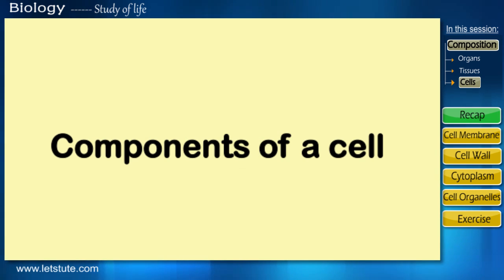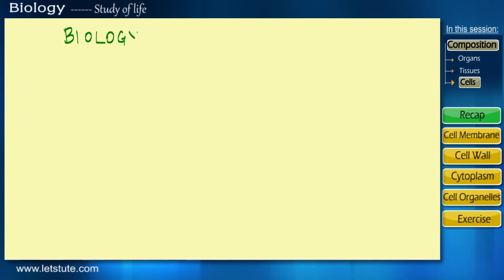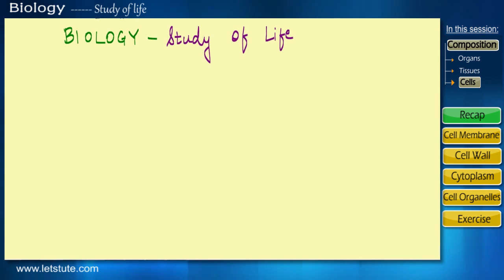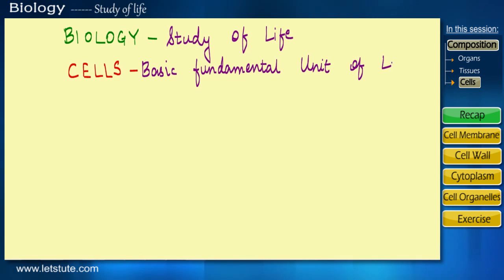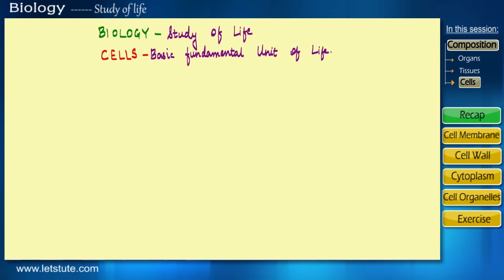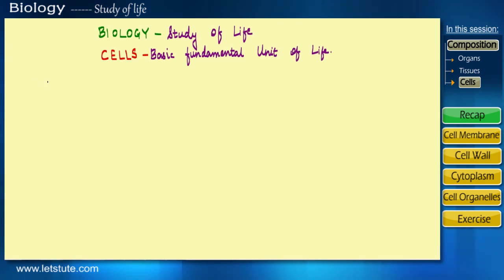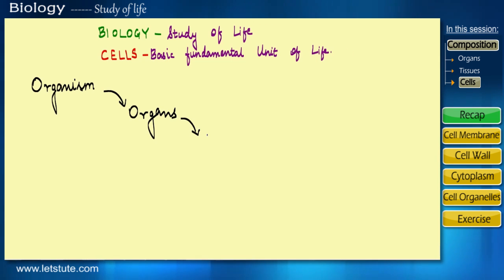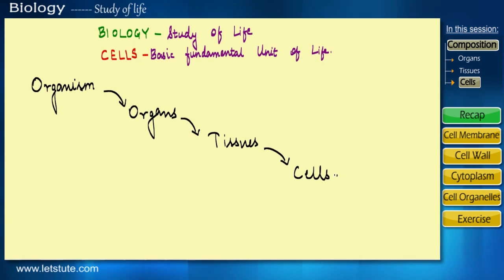Components of a cell. So till now we know that biology is the study of life, and cells are known to be the basic fundamental unit of life. So in order to study the functioning of life, we need to study the functioning of cells. In our previous session on cells, we have said that any living organism is ultimately made up of cells. So the functions that we perform will be similar to the functions that a cell performs.